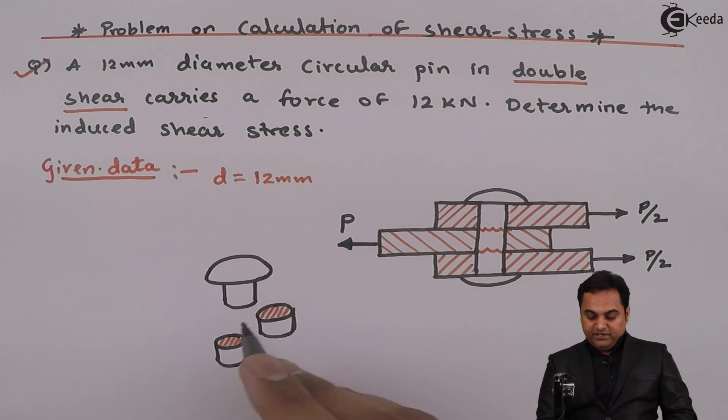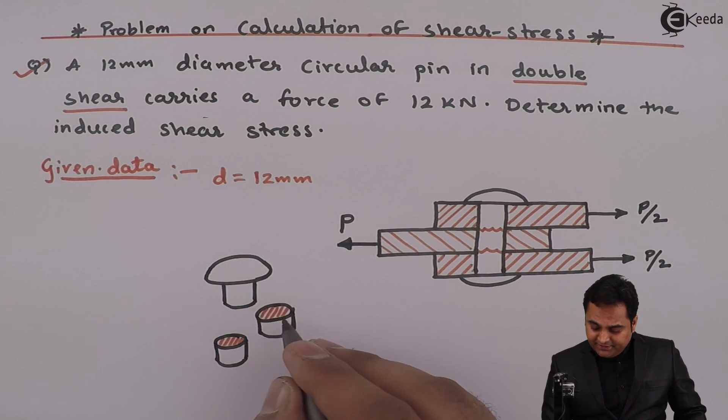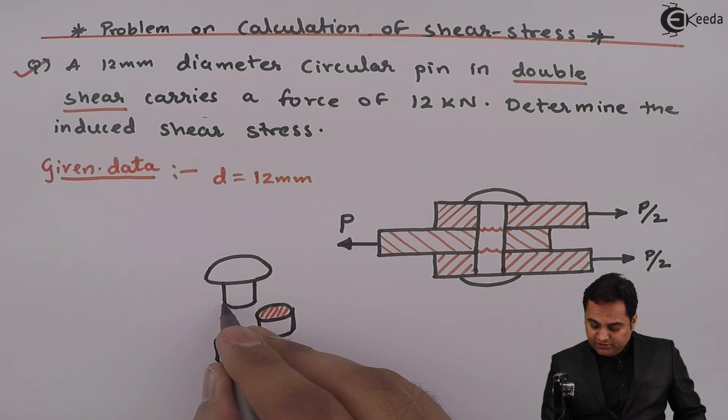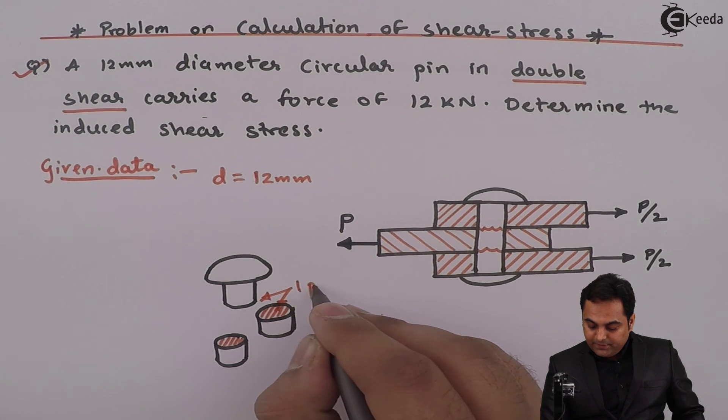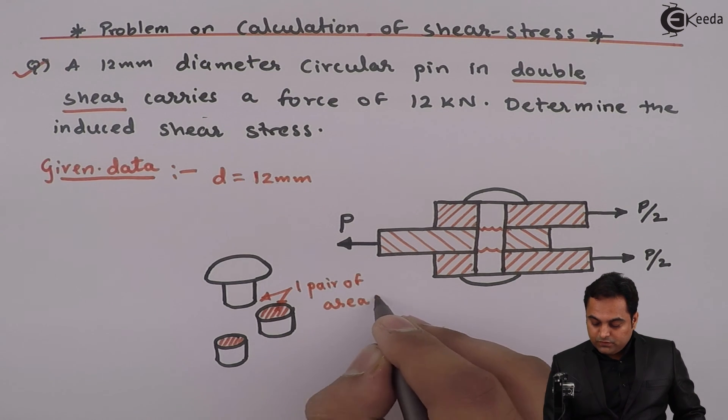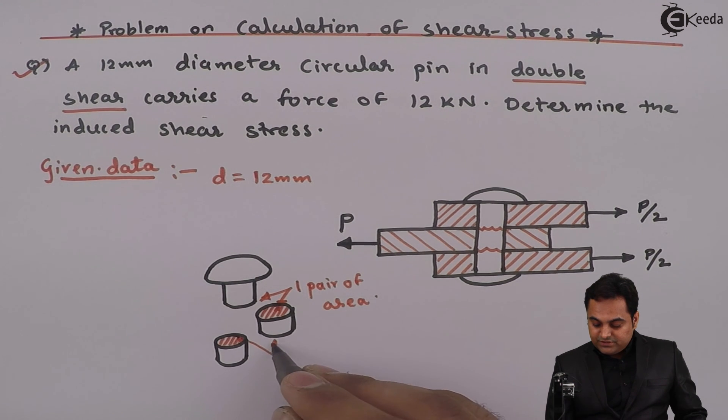This pin would be breaking in this form. How many areas do we have here? First I am getting an area here, and similarly there would be an area here as well. This indicates one pair of area. Next I am getting one pair of area, another is here.